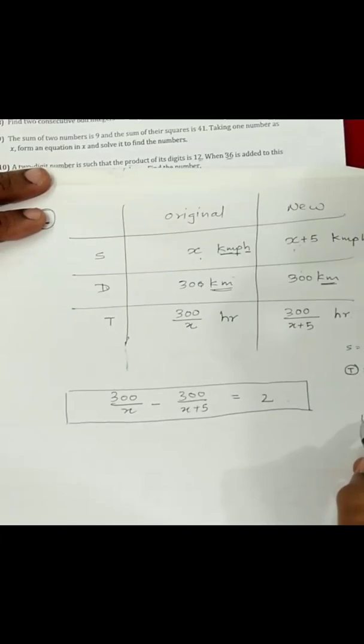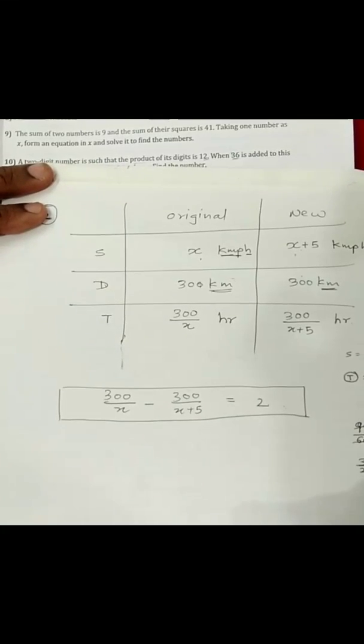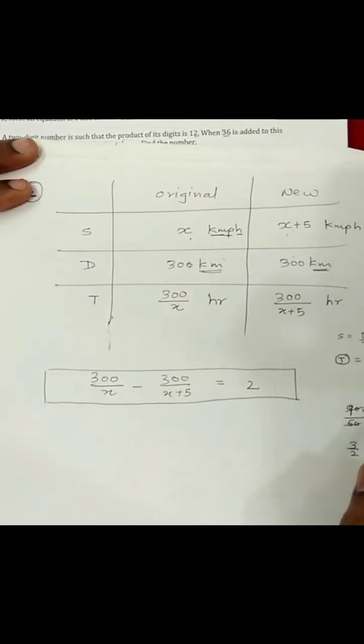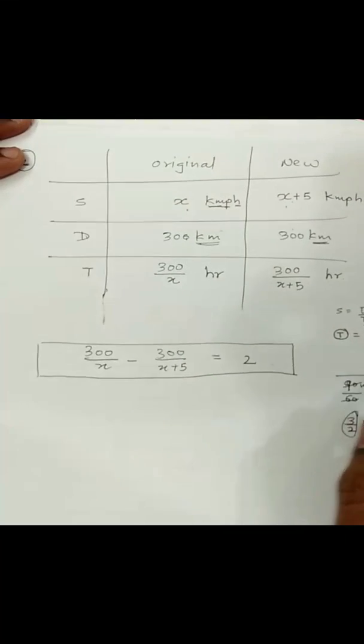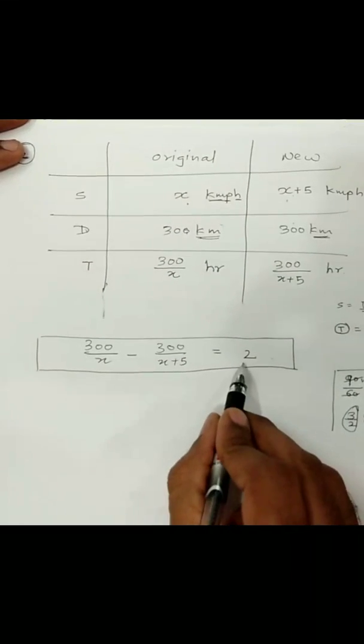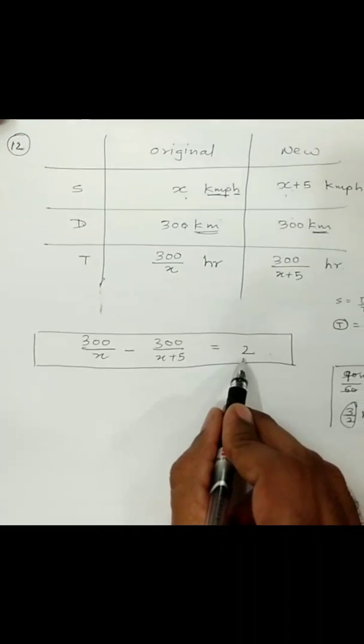In case the time is given in minutes, you convert it into hours by dividing by 60. For example, if it is 90 minutes, then 90 divided by 60 gives you 3/2 hours. In our case, it was simply given as 2 hours, so it is a little simpler.